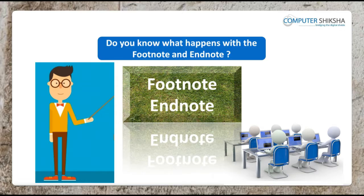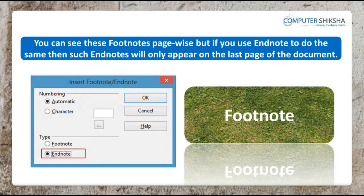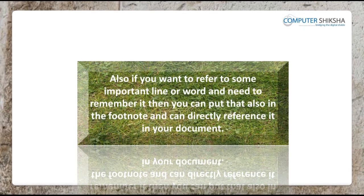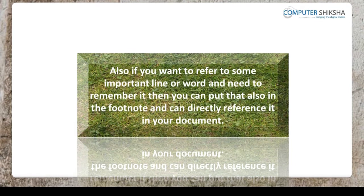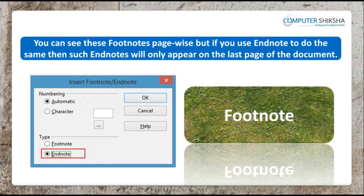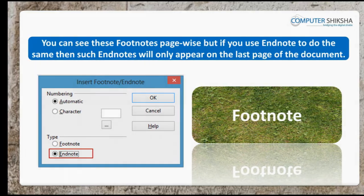Do you know what happens with the footnote and endnote? With the footnote, you can insert a note at the bottom of the Writer page. Also, if you want to refer to some important line or word and need to remember it, then you can put that also in the footnote and can directly reference it in your document. You can see these footnotes page-wise, but if you use endnote to do the same, then such endnotes will only appear on the last page of the document.